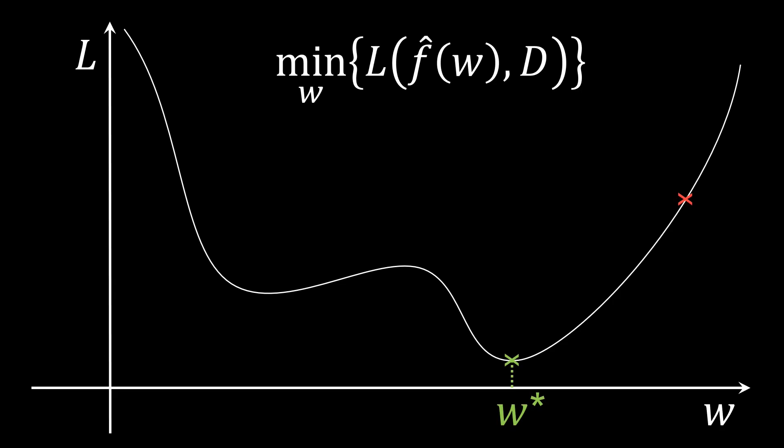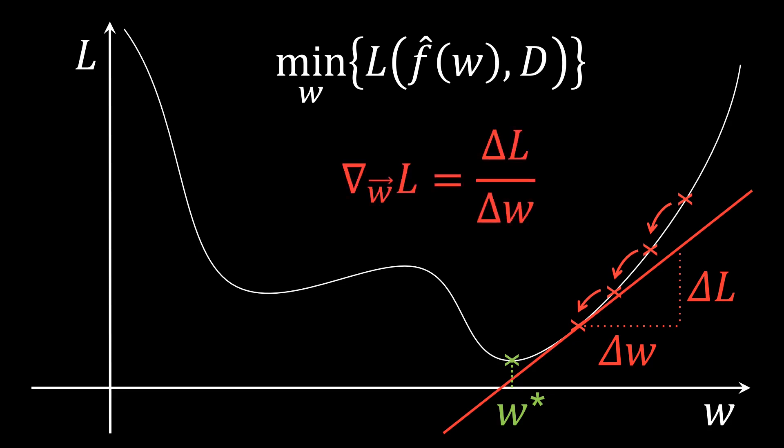What we aim to find is the weight w star that minimizes the loss. Given some initial guess, the idea of gradient descent is to iteratively update the guess to approach this optimal solution over time. To do so, we can look at the slope of the loss. This is given by the gradient of the loss with respect to the weight. Note that this gradient gives us a local linear approximation to the unknown loss surface.